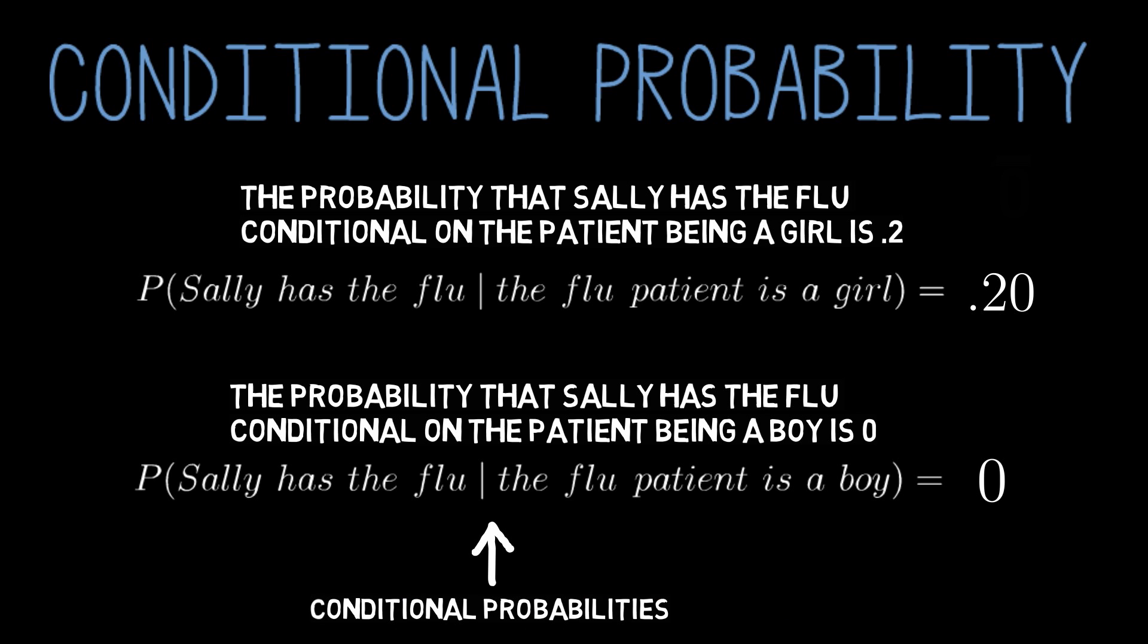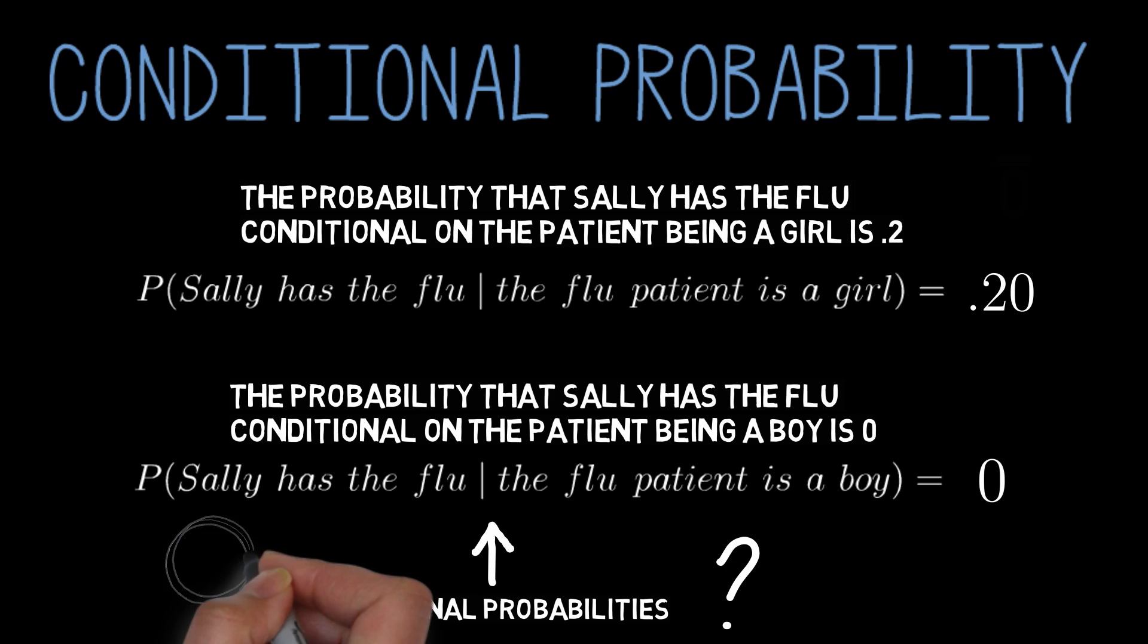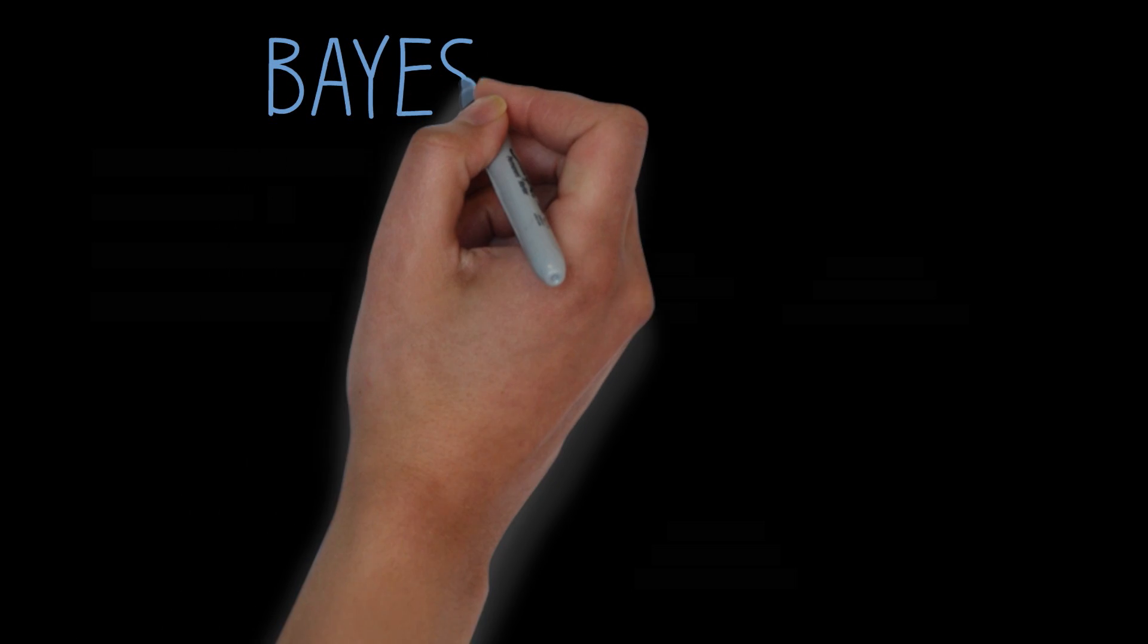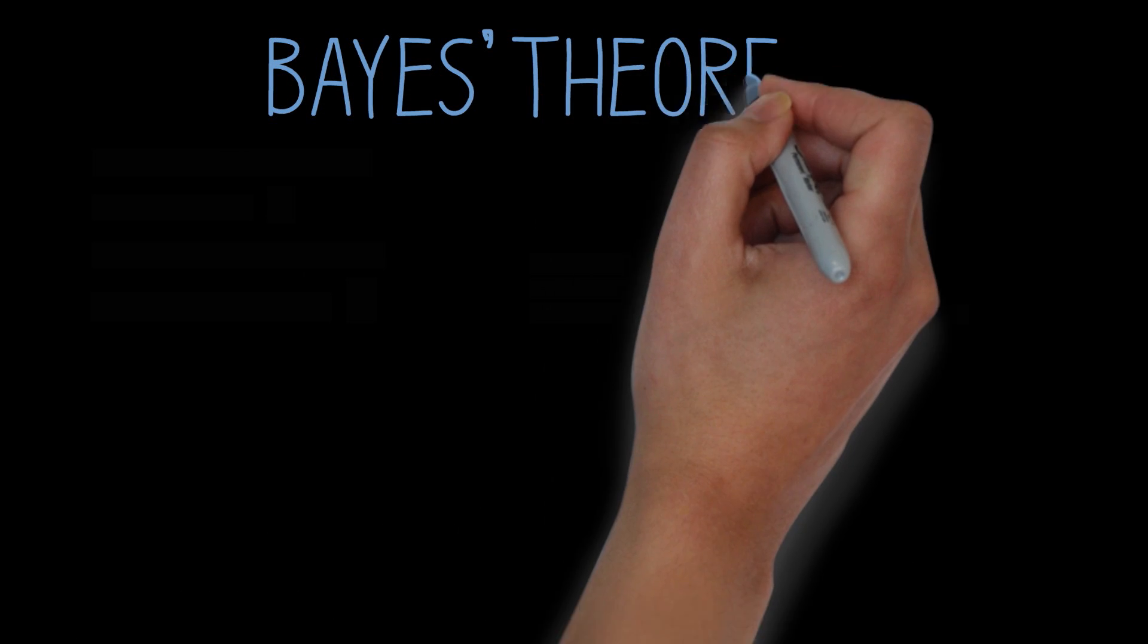Now, here's the thing. Sometimes you don't know what your conditional probabilities should be. In other words, you know that you might encounter some new evidence in the future, but you don't yet know how that evidence should affect the probability you assign to some hypothesis. Here's where Bayes' theorem comes in. It gives you a way of figuring out what your conditional probabilities should be.